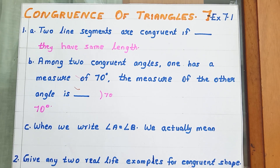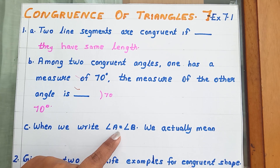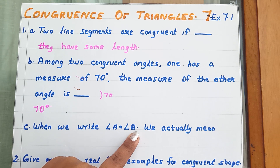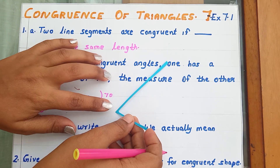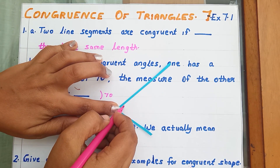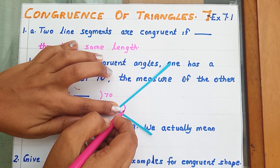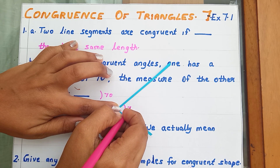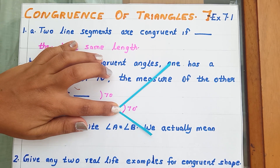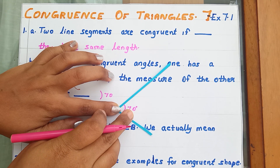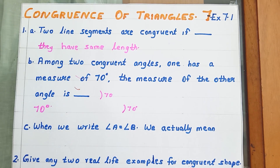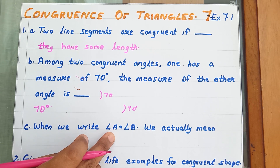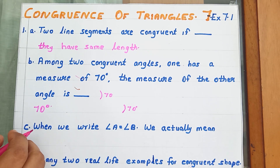When we write angle A equal to angle B, what does it actually mean? This is angle A, and if we are measuring it we will be getting 70 degrees. That means the measure of angle A is 70 degrees, so instead of writing angle A I can write down 'measure of angle A'.